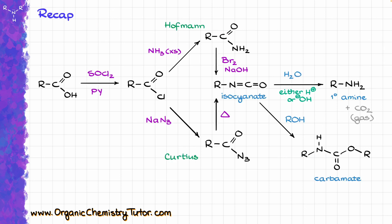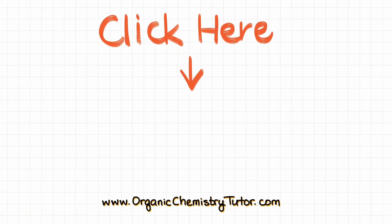Looking back at our reaction scheme, both Curtius and Hofmann rearrangements are almost the same thing — a very neat way to take a carboxylic acid and convert it into the corresponding primary amine, losing one carbon in the process. These rearrangements work for virtually any type of carboxylic acid, though with a caveat: the reaction is quite moody and tends to give side products and poor yields. For the purposes of introductory organic chemistry, they are still a viable choice in multi-step synthesis — just keep in mind that you are shortening your chain by one carbon and must account for that in retrosynthetic planning. Thank you for watching; if you learned something new, like the video and I'll see you next time!